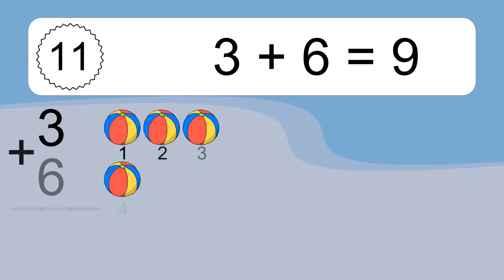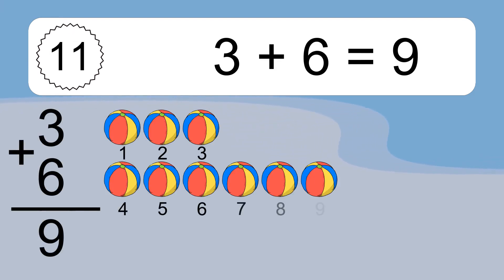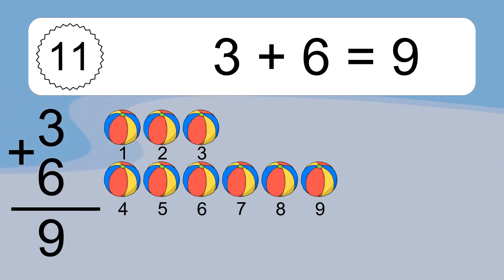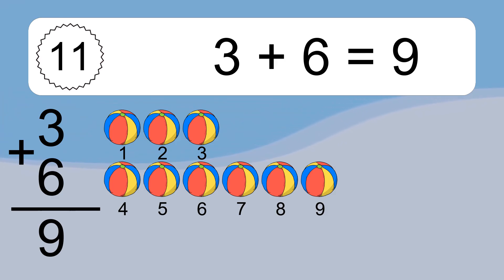3 plus 6 equals what? 3 plus 6 equals 9. Let's count it: 1, 2, 3, 4, 5, 6, 7, 8, 9.